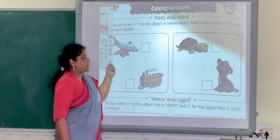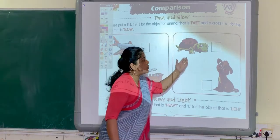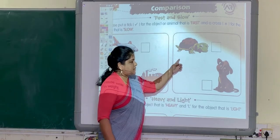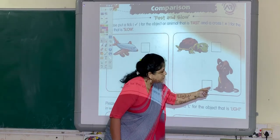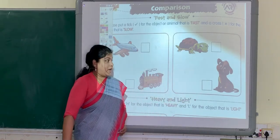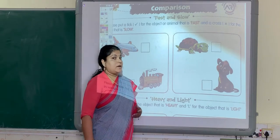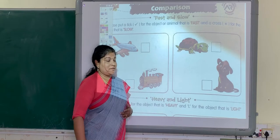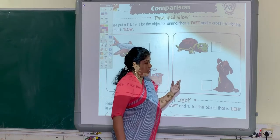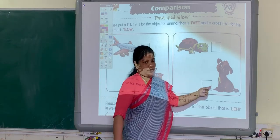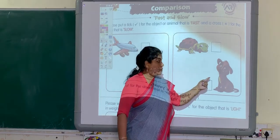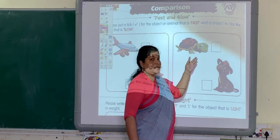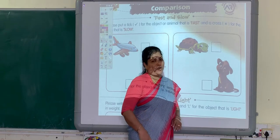Then you can see two animals here — one tortoise and one dog. Can you tell me which animal moves fast? Which animal runs fast? I will tell you — this dog runs fast, and this tortoise runs very slow.